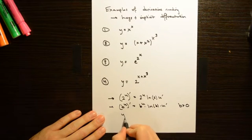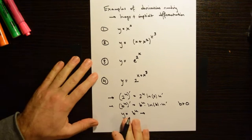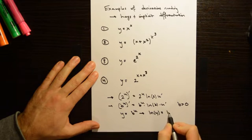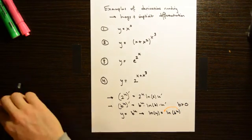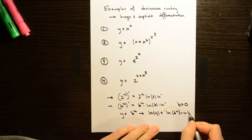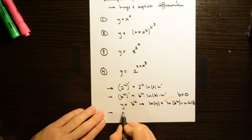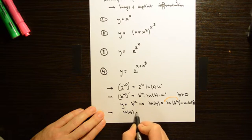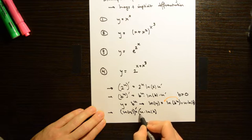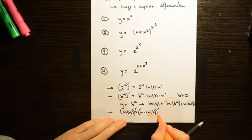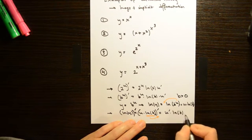To derive this rule: let y equal b to the u. Take the natural log on both sides to get ln(y) equals ln(b to the u), and using the exponent rule, bring the u down in front to get u times the natural log of b. The natural log of b is a constant, so when we differentiate we treat it as such. Differentiating both sides with respect to x, the constant natural log of b moves out of the derivative expression, giving u prime times the natural log of b.